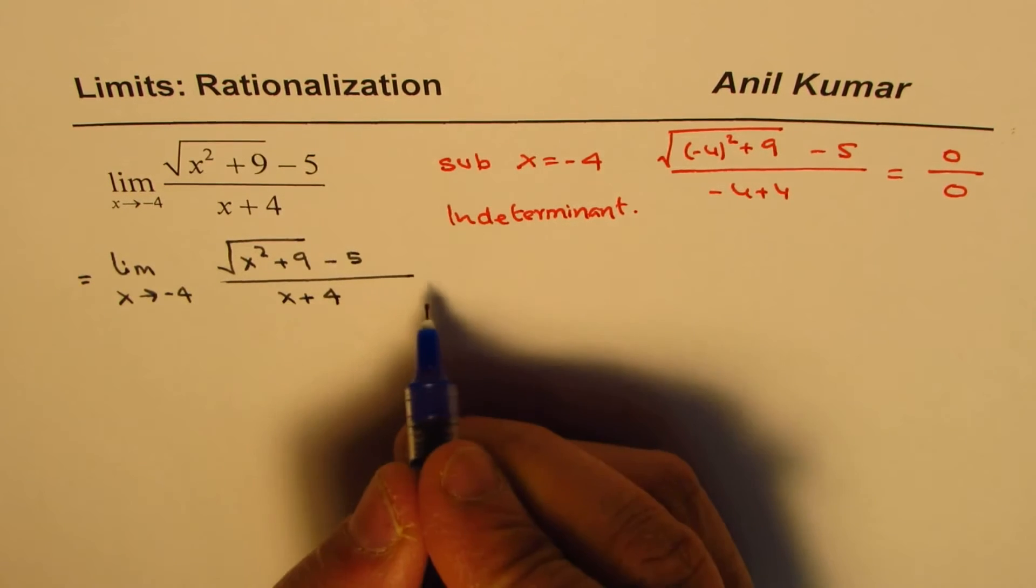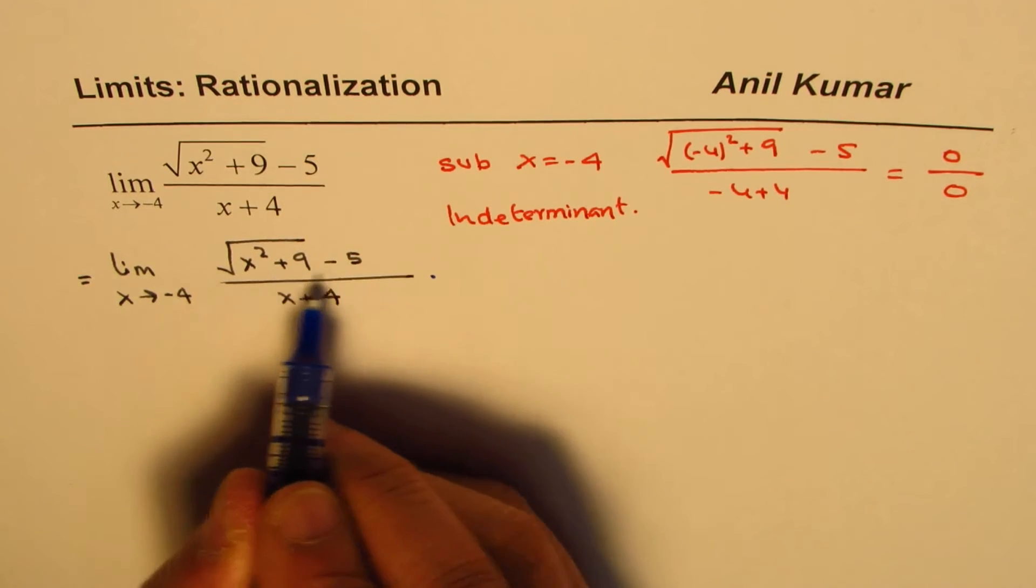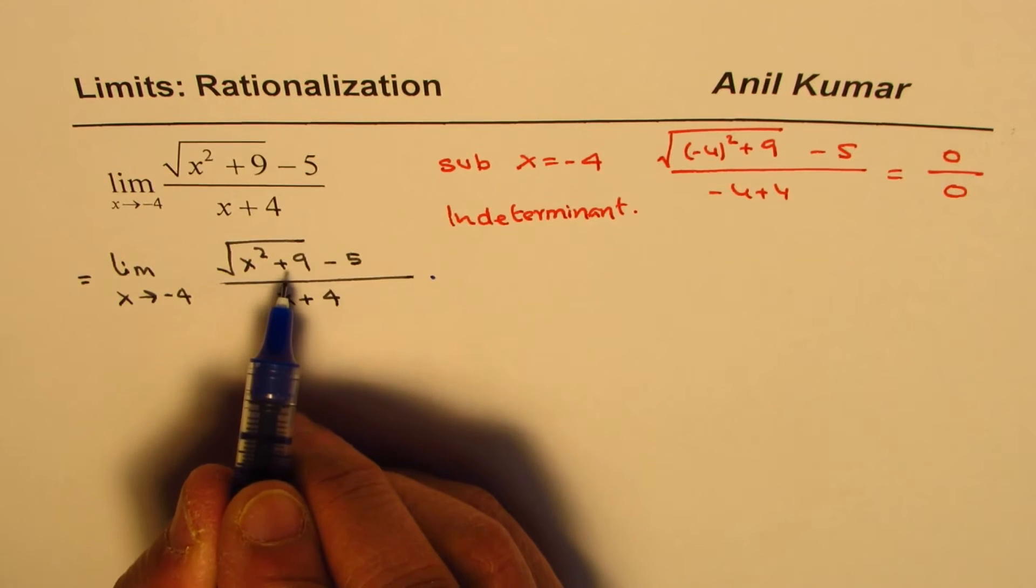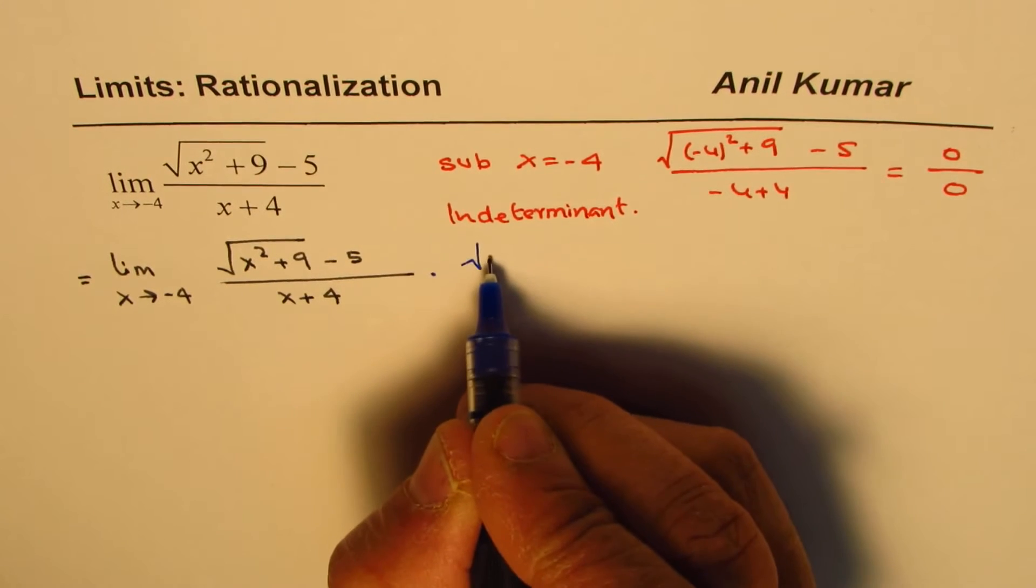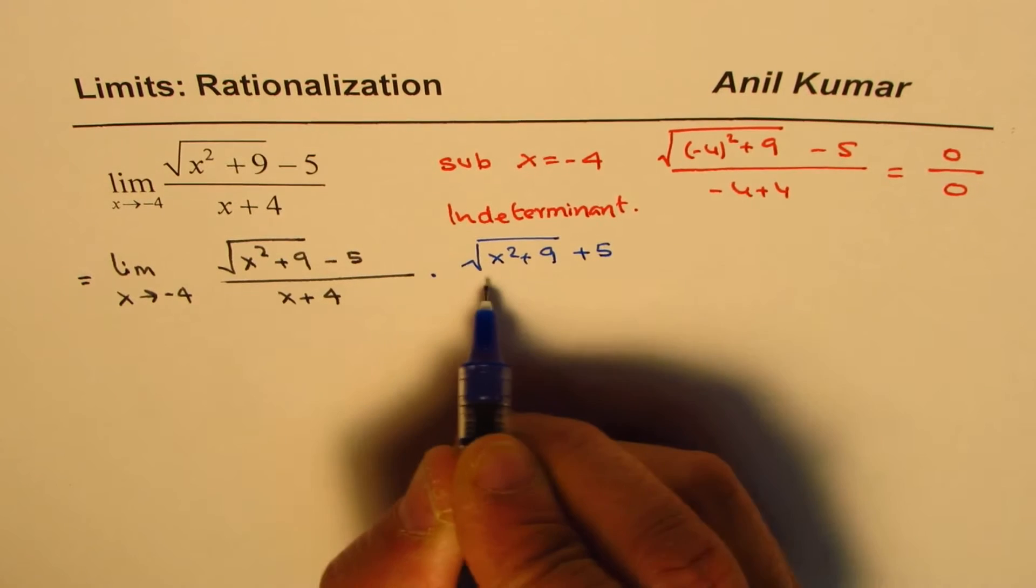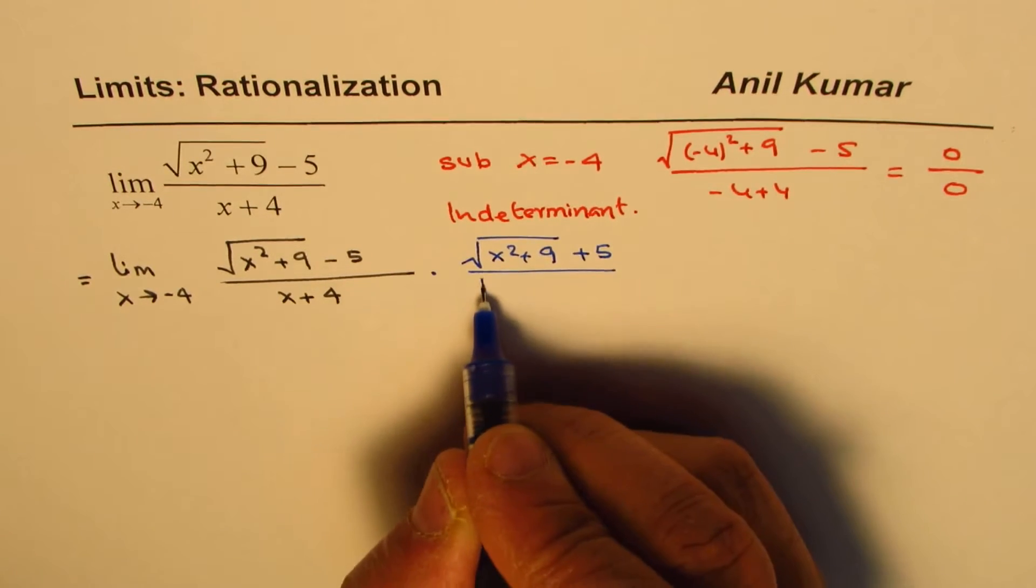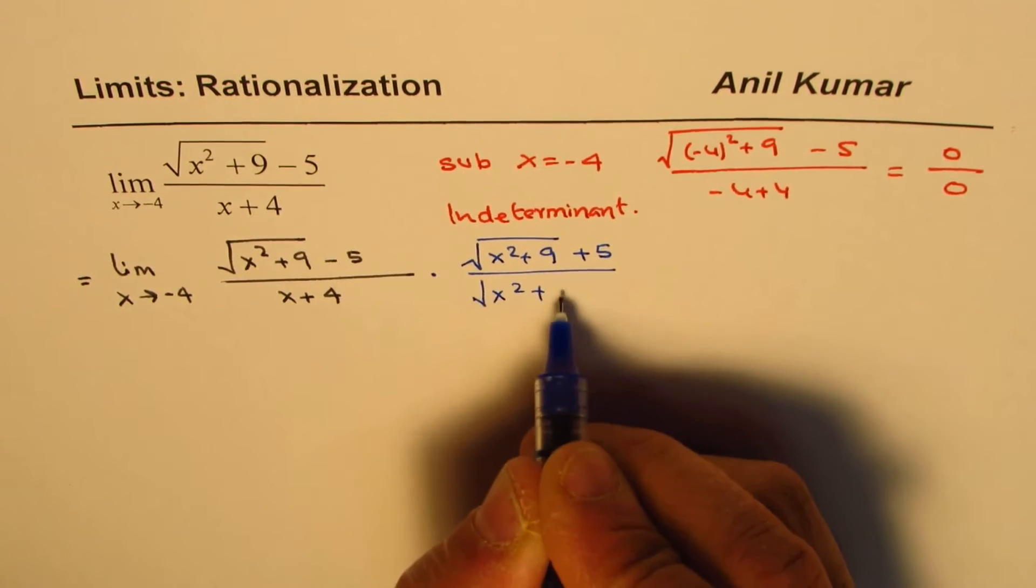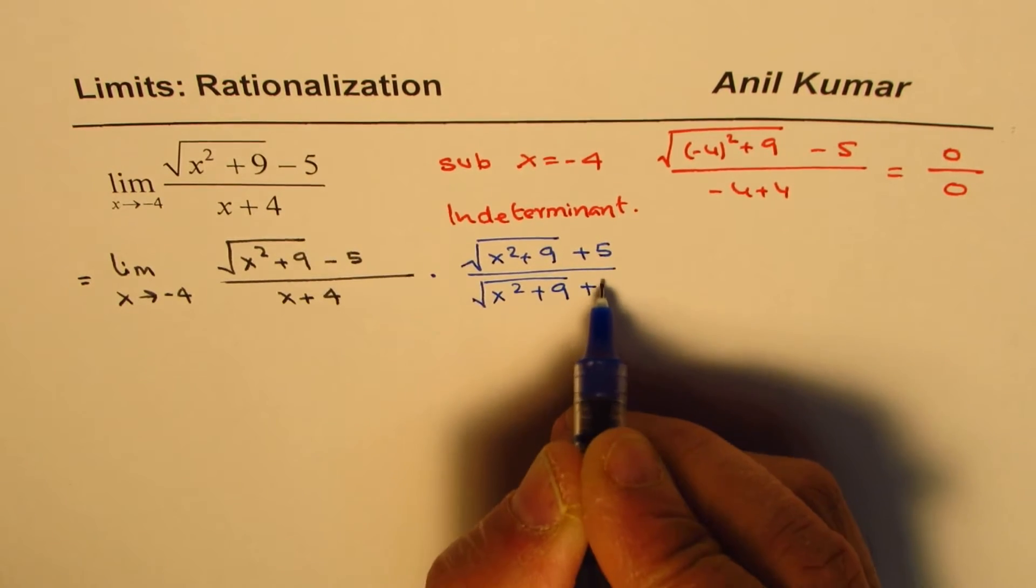When you rationalize, you multiply and divide by the conjugate. We rationalize the numerator, so we multiply and divide by √(x²+9) plus 5. That is the conjugate of the numerator.